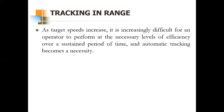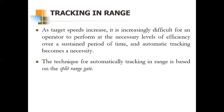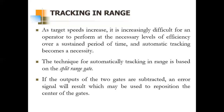Manual tracking was not feasible and had many limitations — it couldn't be used with missiles. So we went for split gate tracking, which performs automatic tracking in range based on a range gate. As target speeds increase, it becomes increasingly difficult for an operator to maintain the required levels of efficiency. In the case of missiles, target speed is too high to manually rotate a hand wheel, so we employ what is called split range gate tracking.